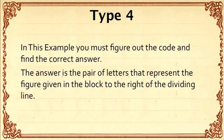Type 4 Nonverbal Reasoning. In this example you must figure out the code and find the correct answer. The answer is the pair of letters that represent the figure given in the block to the right of the dividing line.